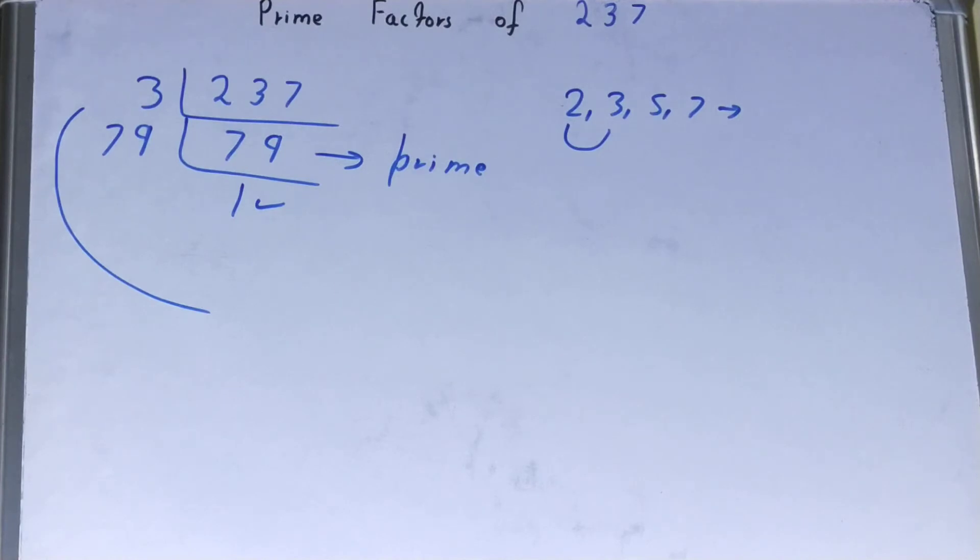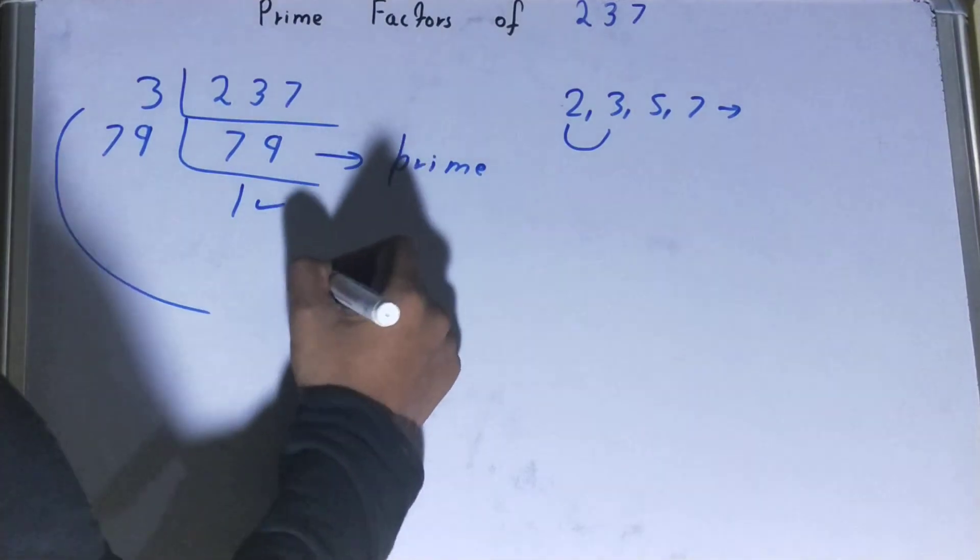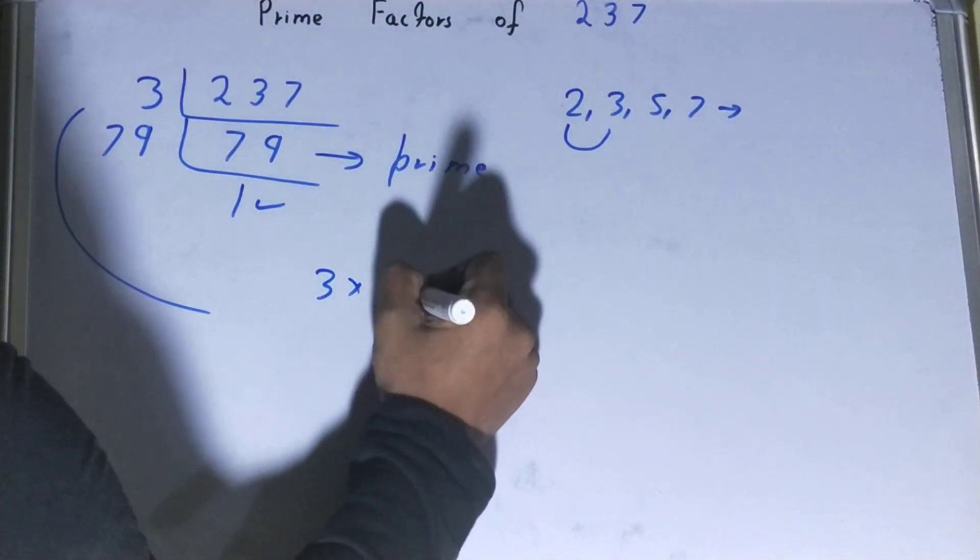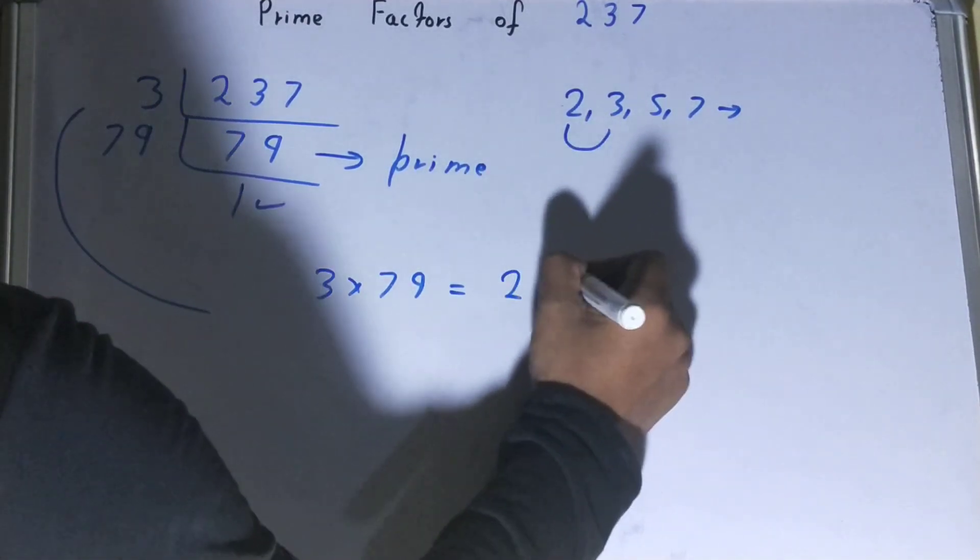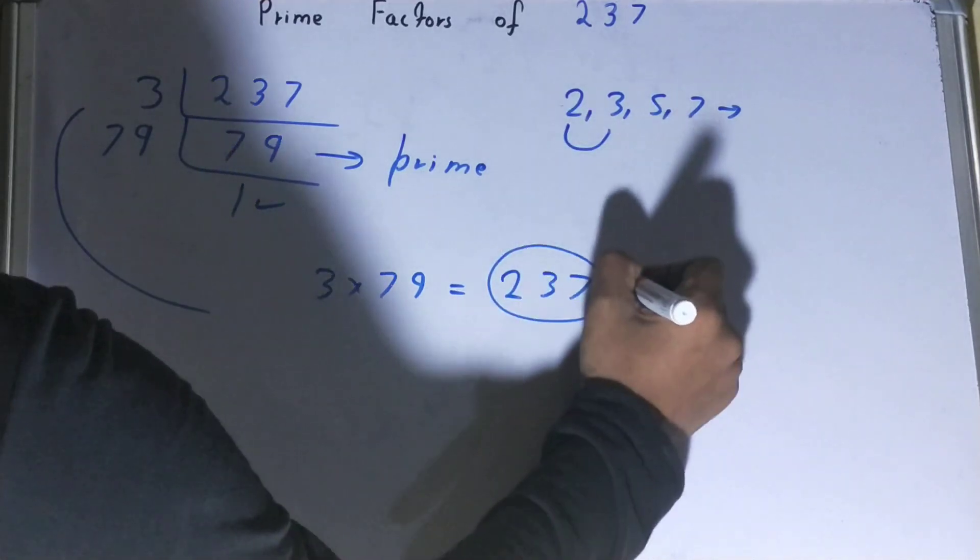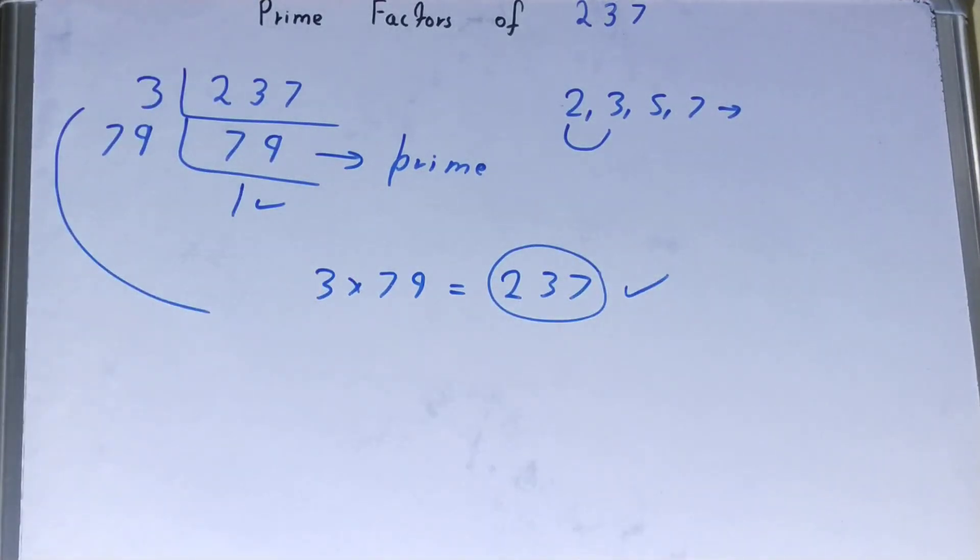That is 3 times 79. If you want to confirm whether it is right or not, you can multiply them. And if on multiplying you have the number back again, that means your calculation is correct. If not, you need to recheck. So this was all about prime factors of 237.